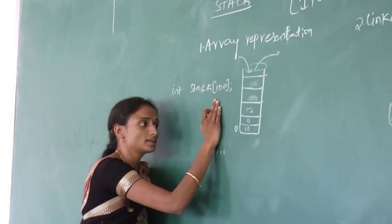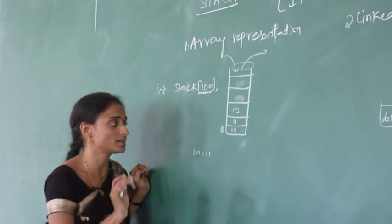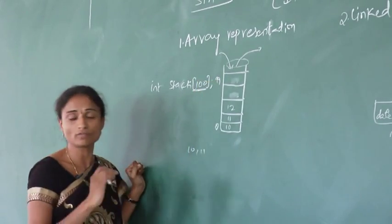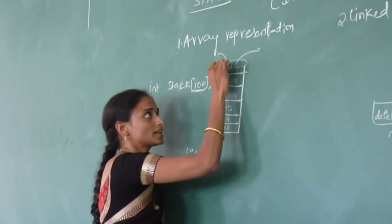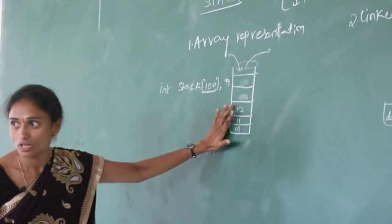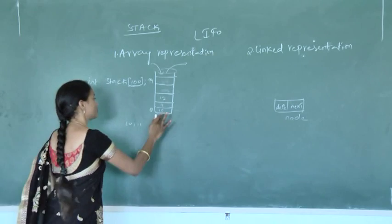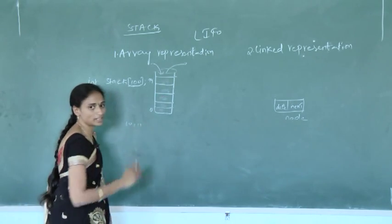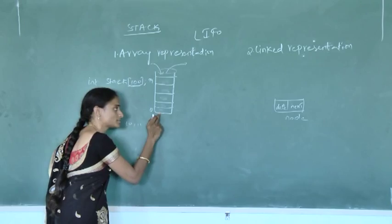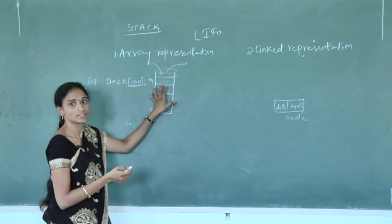In array representation, our stack capacity is 100, meaning we are inserting elements from index 0 to 99. If we want to insert another element beyond that, it cannot be inserted because our stack capacity is full. If the stack is full, we cannot insert elements. Similarly, if we want to delete an element but the stack represents empty, we cannot delete elements from this stack.